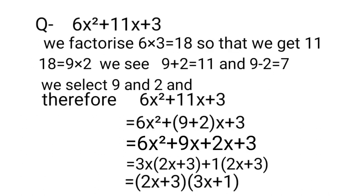6x² + 11x + 3. We factorize 6 × 3 = 18 so that we get 11. Since 18 = 9 × 2, we see 9 + 2 = 11 and 9 - 2 = 7. We select 9 and 2.